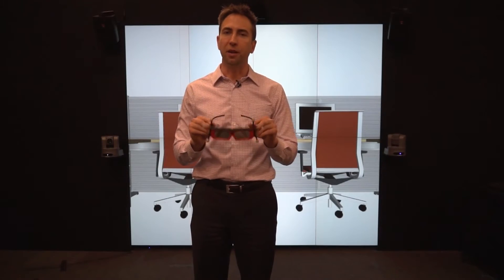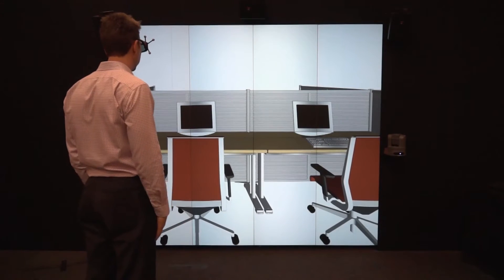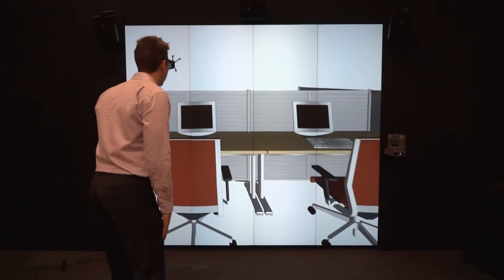Now, with tracking turned on, when I wear the glasses, the view perspective changes based upon my position and orientation in space. If I wanted to see underneath the desk, all I would have to do is bend down.